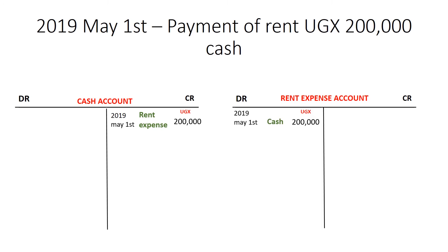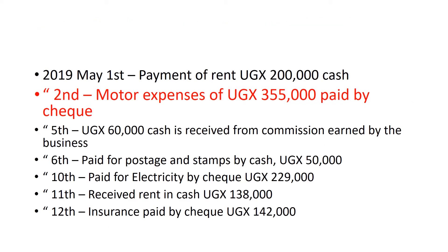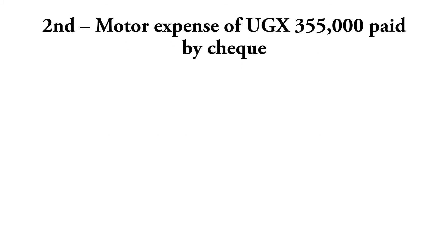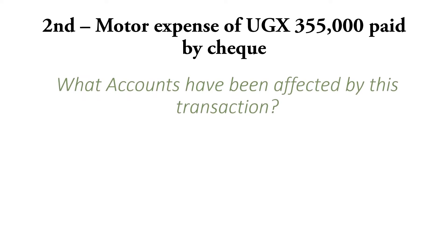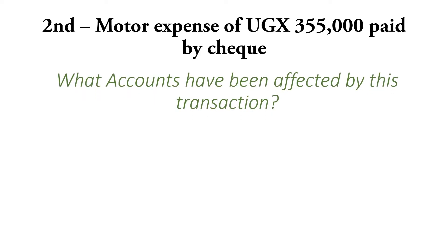We go on straight to the next transaction. On the 2nd, a motor expense of 355,000 was paid by check. So what accounts have been affected? We paid an expense, so we reduce money. And since it was a check that was used to pay this expense, the amount of money we have in the bank reduces. The accounts affected are the bank account, which has reduced, and our motor expenses, which have increased.